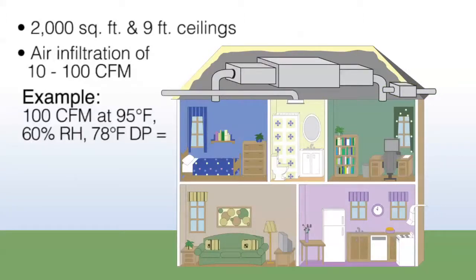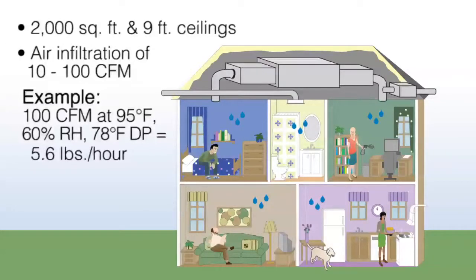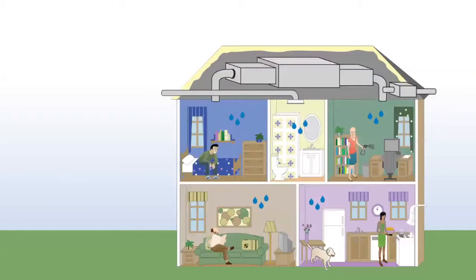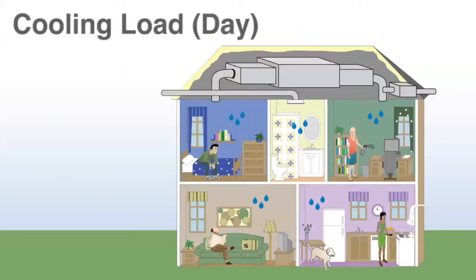With 100 CFM at 95 degrees and 60% RH — which is a 78 degree dew point — we've got about 5.6 pounds of water that enters the home above what we'd like. For people in a home, respiration and activity would add about 2 pounds per hour. So the total load of moisture on that home from occupants and infiltration is 7.6 pounds per hour. The numbers we're using for outside load are based on a design day from ASHRAE, which is the hottest days of the year. Three to four percent of the days would be at that level, and of course we go all the way down to not needing any cooling at all, which could occur anytime during the warmer three seasons.